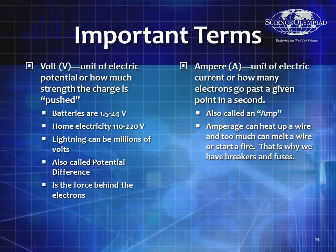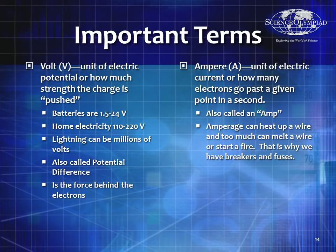Let's talk about some important terms. A volt is a unit of electrical potential, or how much strength the charge is pushed. Most batteries are anywhere from 1.5 to 24 volts. Home electricity is about 110 to 220 volts, and it's also alternating current. Lightning is DC and can be millions of volts. Voltage is sometimes called potential difference, sometimes called electromotive force — it's the force behind the electrons to make them move.